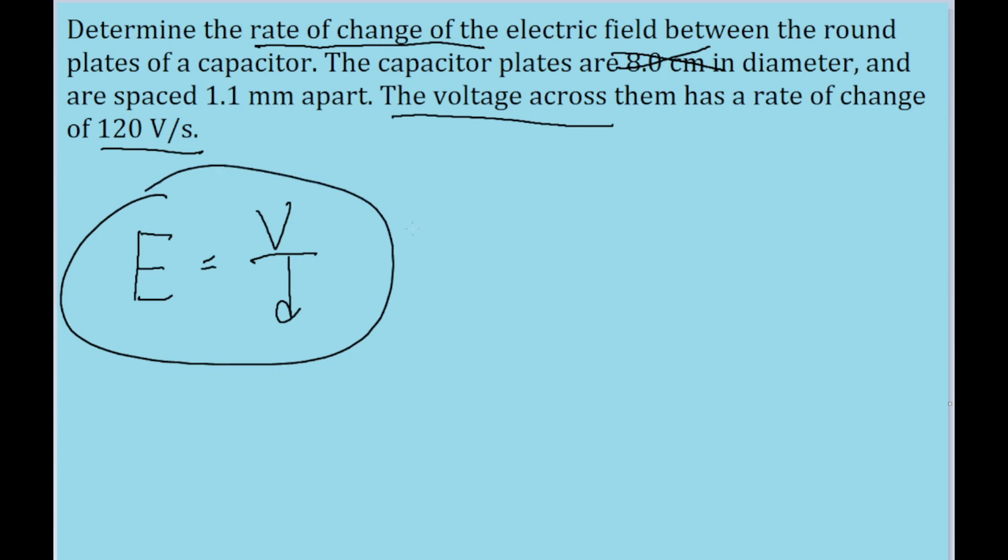We can take this formula and convert it into a rate of change formula by adding a delta to the two variables we want to change and dividing both sides by delta T. So E becomes delta E over delta T. We'll do the same thing to the other side. I'm going to take out the constant d. The voltage V is changing as well, so we divide this side by delta T as well. This is the equation we're going to use. Delta V over delta T is given to us as the rate of change of that voltage.